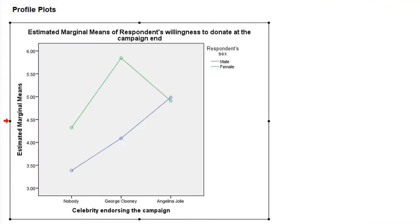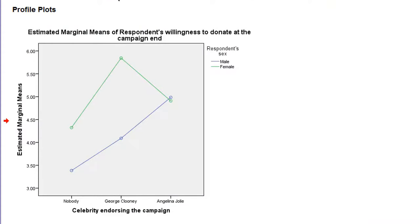Finally, let's have a look at the interaction effect. The best thing is to look at the means plot. The blue line represents male respondents and the green line represents female respondents. If there is no celebrity endorser, females are on average more willing to donate than men. But if we look at George Clooney as endorser, the difference between females and males is much larger — females confronted with George Clooney are much more willing to donate than men. For Angelina Jolie, we don't see a difference between males and females at all; they more or less have the same willingness to donate. So the difference between males and females with respect to willingness to donate is different for different endorsers. Different differences — that is moderation.